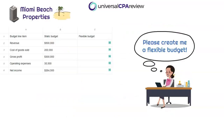In this simulation, we have Miami Beach Properties. They prepared a static budget for May of year four, and then Shelly, the CFO, wants to create a flexible budget for that same period. So we have the static budget figures and we need to go to a flexible budget.